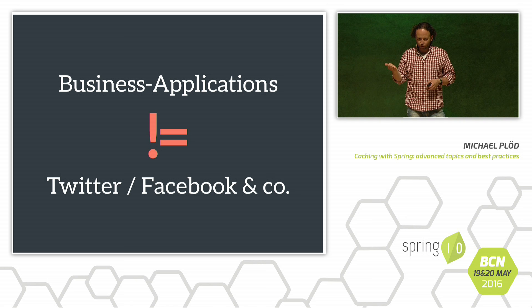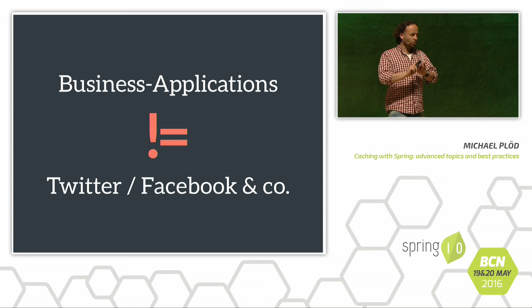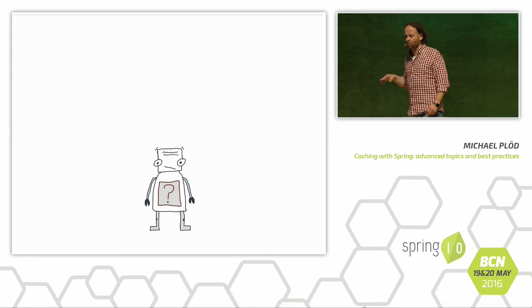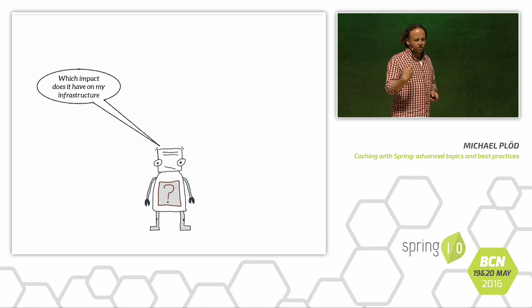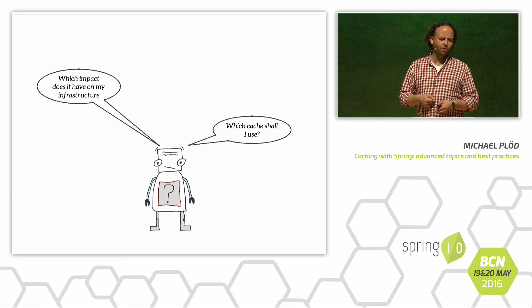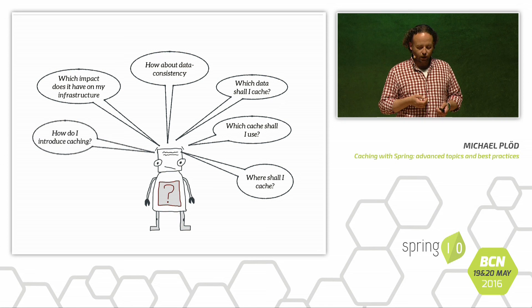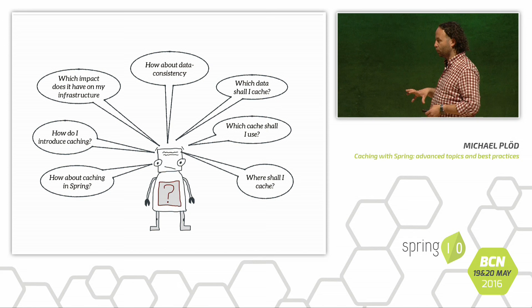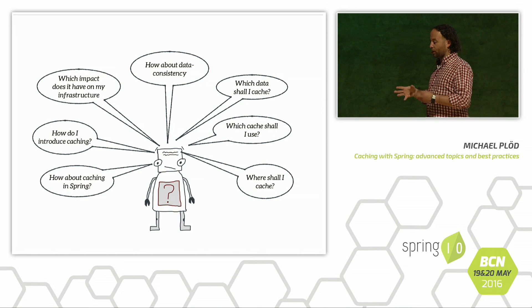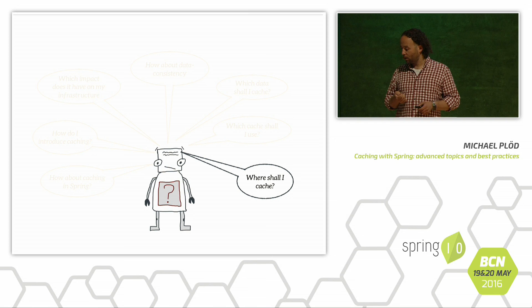If you want to get into the topic, I'd recommend learning your non-functional requirements: what about latencies, eventual consistency, the amount of actual data, requirements for scalability, and so on. When introducing caching to an application, a couple of questions arise: what's the impact on my infrastructure, which cache implementation should I use, should I write my own cache, how about data consistency, where in the application should I cache, which data should I cache, and how can I handle caching with Spring? We'll go through all of these questions within the talk.